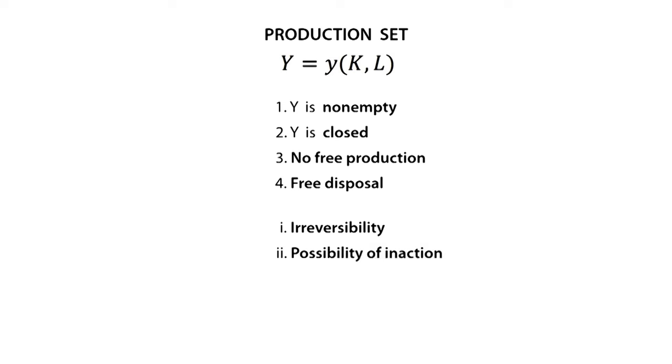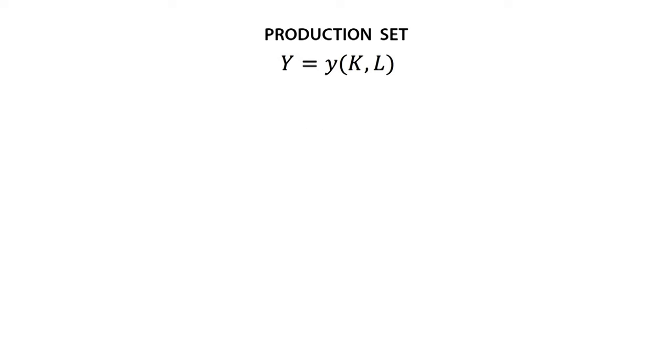Possibility of inaction refers to the ability of a firm to have the choice not to perform any action. It is also common to add the following three assumptions. Additivity says that if Y1 and Y2 are elements of the same feasible production set Y, then the production set that consists of adding Y1 and Y2 is also a part of the same feasible production set.